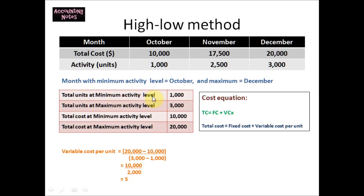Next, we record the total units at the minimum activity level — October — which is 1,000 units. Then we record the total units at the maximum activity level — December — which is 3,000 units. We also record the total cost at the minimum activity level: October's total cost is $10,000. And the total cost at the maximum activity level: December's total cost is $20,000.